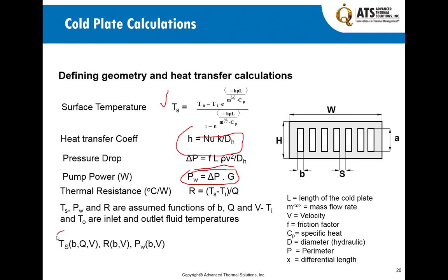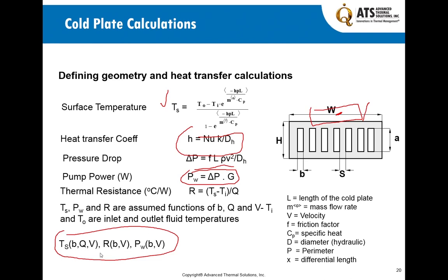The three key parameters — surface temperature, pumping power, and thermal resistance — are functions of the channel wall thickness, the heat transfer coefficient, and the fluid velocity. Surface temperature must meet the junction temperature requirement, since the device sitting on top of the cold plate has a junction temperature to manage. Pumping power is a system design issue: how much power is required? And thermal resistance provides guidance on the overall resistance, so these two go hand-in-hand as important design parameters.